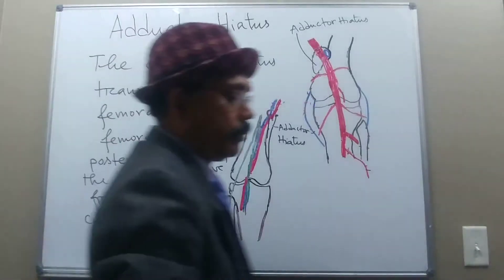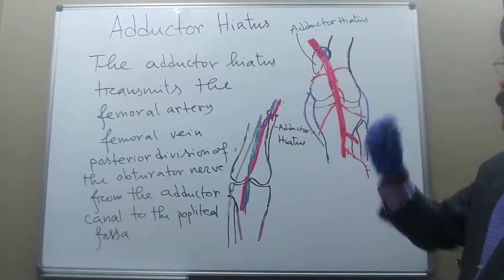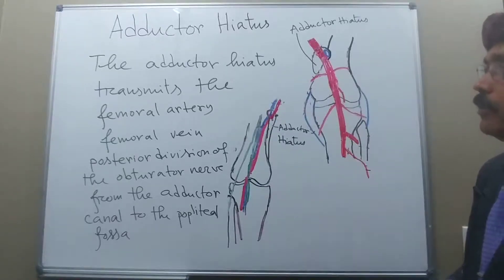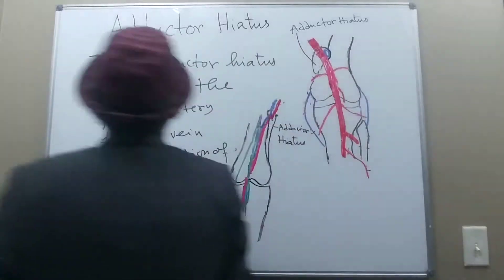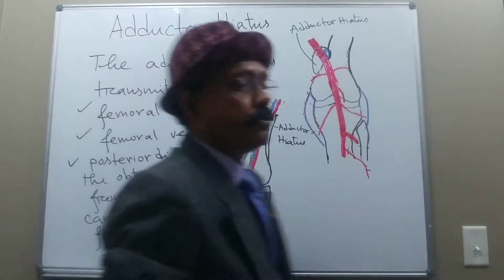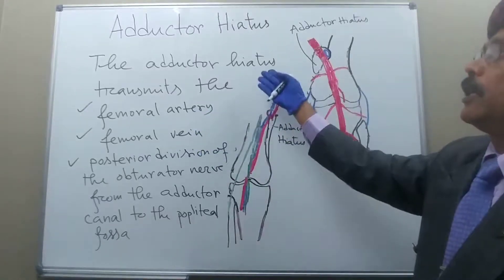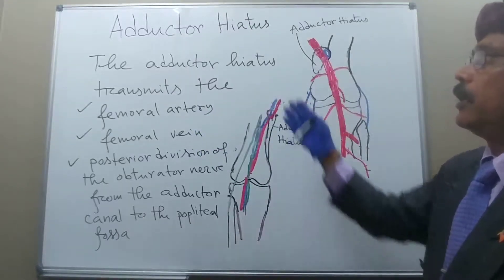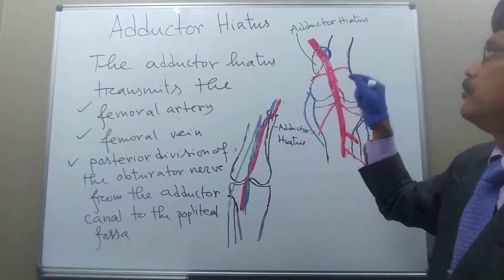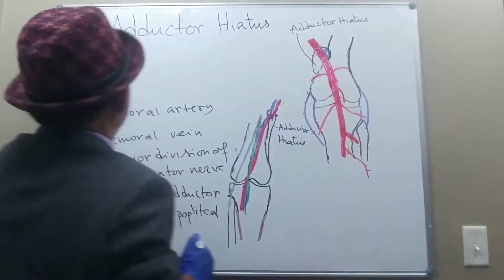So the adductor hiatus is the gateway that transmits the femoral artery, femoral vein, and posterior division of the obturator nerve — these are its contents. The adductor hiatus is a gap in the insertion of the adductor magnus.